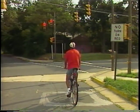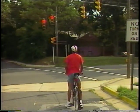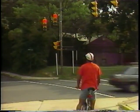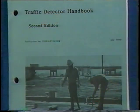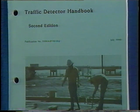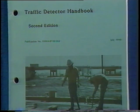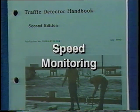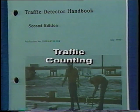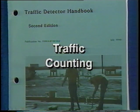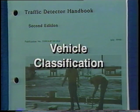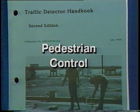Mainline control capabilities include driver information, variable speed control, lane closure, mainline metering, and reversible lane control. Traffic detectors have many alternative applications; your Traffic Detector Handbook details the applications mentioned in this video as well as speed monitoring, traffic counting, vehicle classification, and pedestrian control.